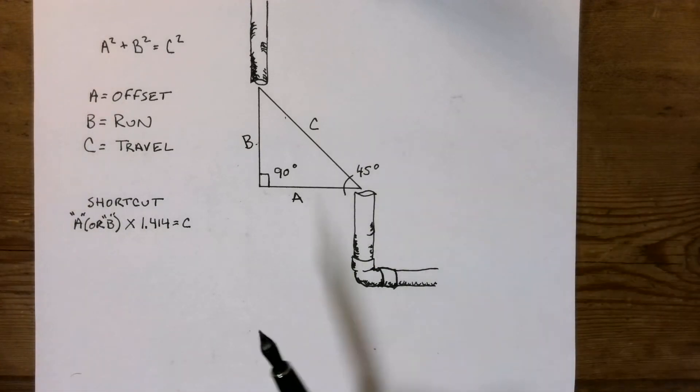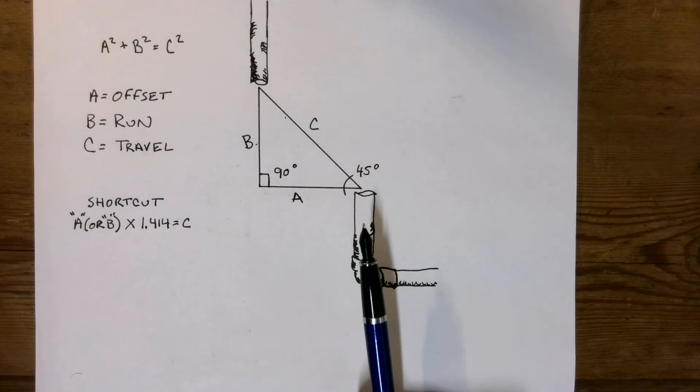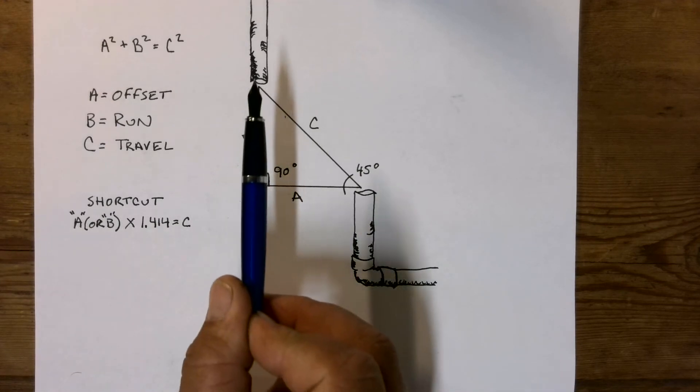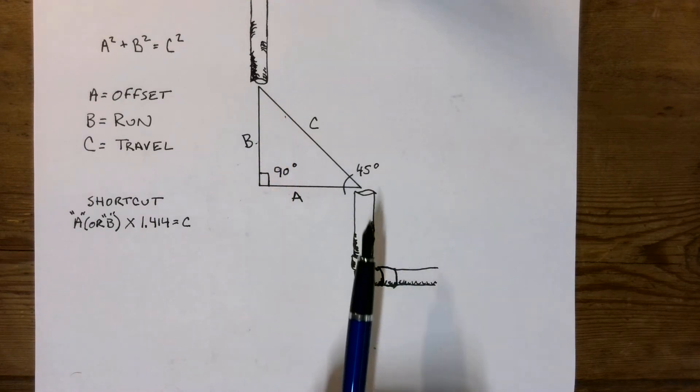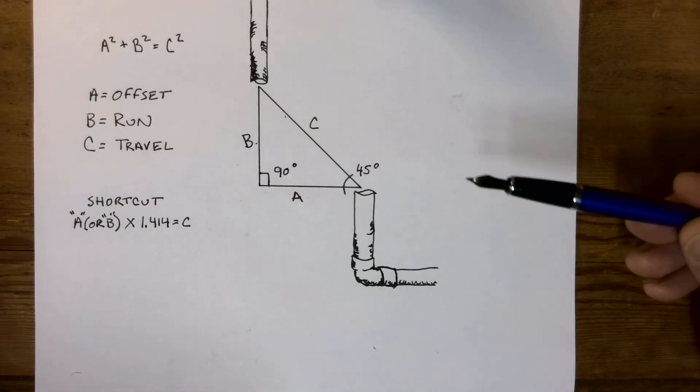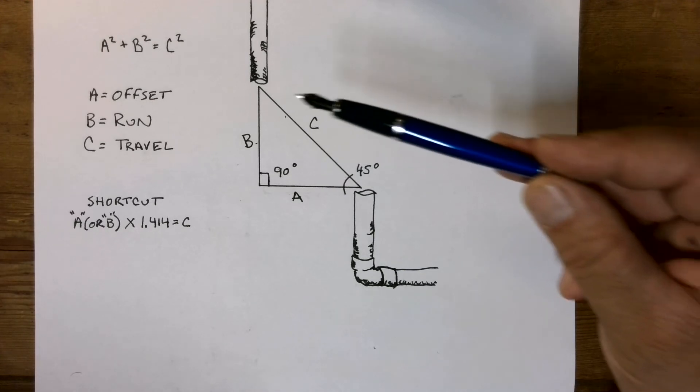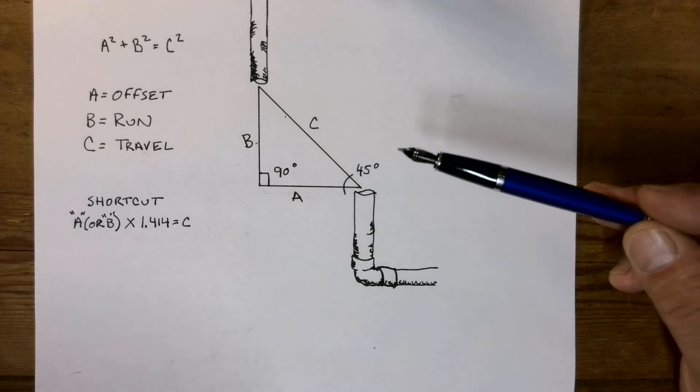So A is the offset. You can see where my pipe is here, and the offset is the distance between this pipe and this pipe. Having to tie them together with two 45s, I would take A squared plus B squared, and give me this distance here, squared, and then take the square root of that to give me the final distance.